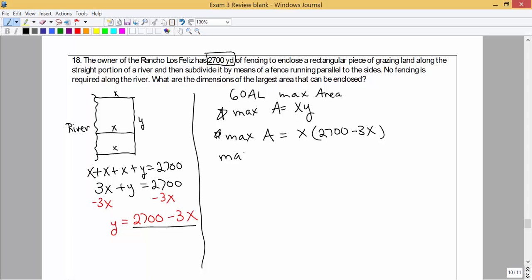So our goal here is to maximize this function of x. Let's just call this A of x. We'll give that an input and let's go ahead and distribute the x, so that's 2700 times x minus 3x squared. And we're looking for some bounds. We want to put some bounds on this function.